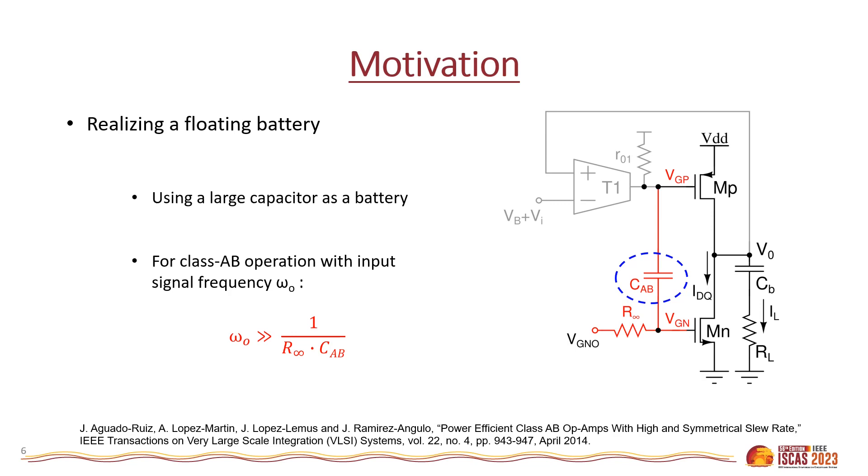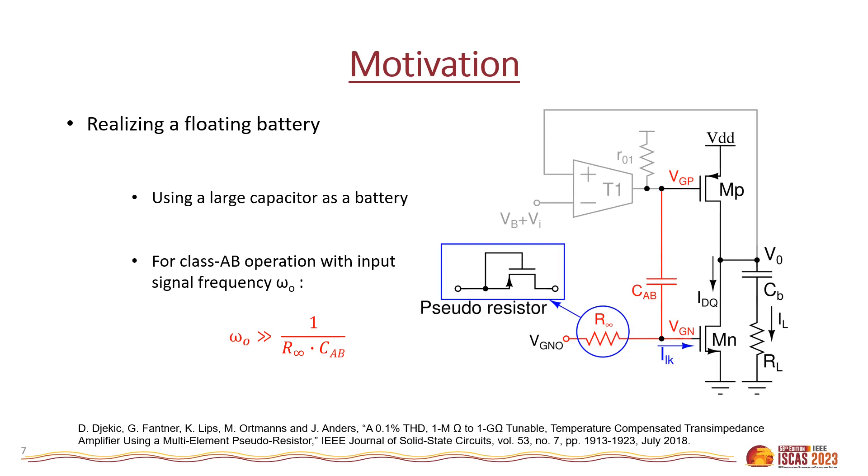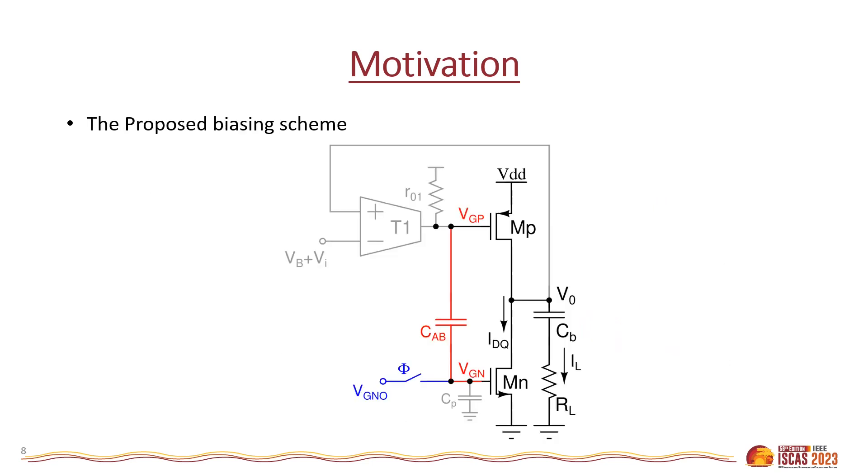In the sub-kilohertz frequency range, for the capacitor CAB of picofarad order, the required value of R-infinity will be in orders of giga-ohms. Large drain-to-source resistance of a MOSFET in sub-threshold region can be utilized to realize a pseudo-resistor. This kind of approach can be used in many technologies which do not suffer from significant leakage due to gate tunneling and through the junction associated with the node VGN. But this scheme becomes unusable in many of the modern processes because of large voltage drop across the resistor R-infinity.